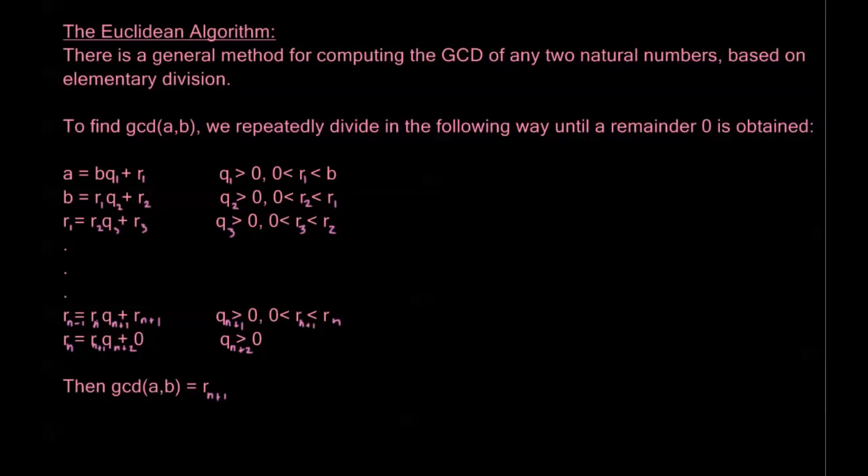Now prime factorization works well for small numbers, but when we get larger numbers, it's useful to use what we call the Euclidean algorithm to compute the GCD. The Euclidean algorithm is a general method for computing the GCD of any two natural numbers, based on elementary division.